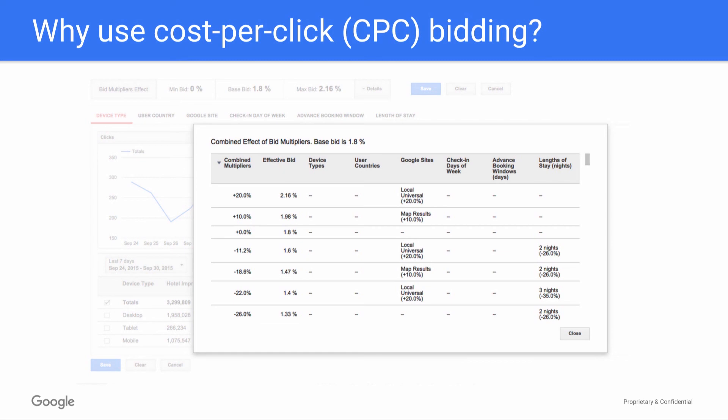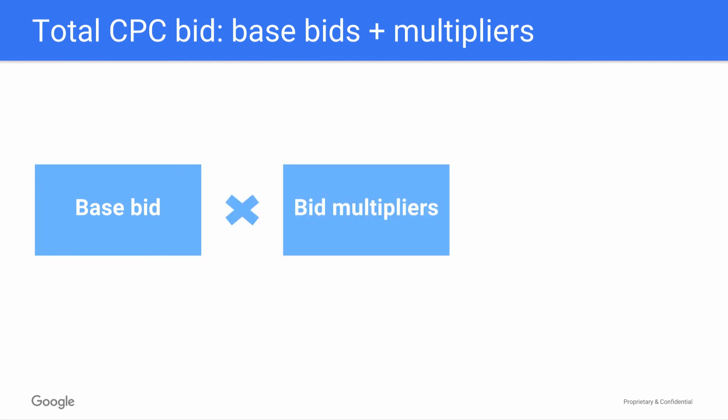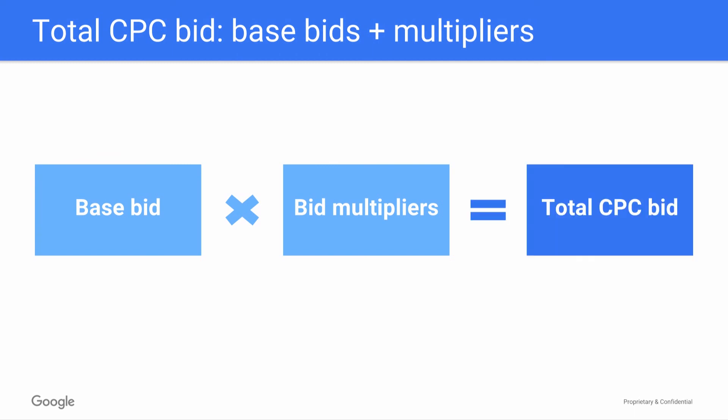Using CPC bids with hotel ads is pretty straightforward. You set a base bid, and this base gets multiplied by any bid multipliers you set. The result is your total CPC bid.